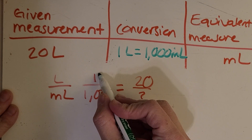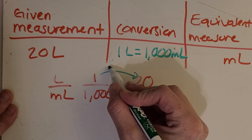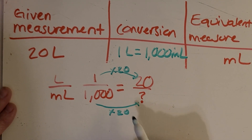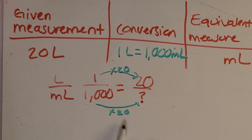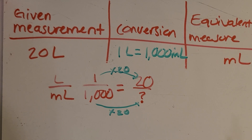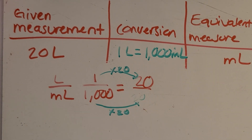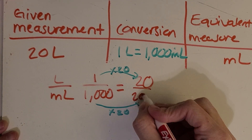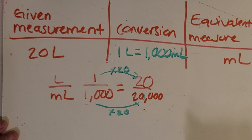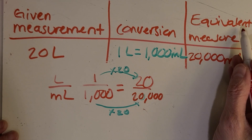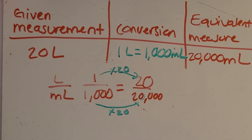Let's check your work. To get from one to 20 — times 20. Same thing to the denominator — times 20. I love mental math problems like this: 20 groups of 1,000 is 20,000. So 20,000 milliliters is equivalent to 20 liters. Great job!